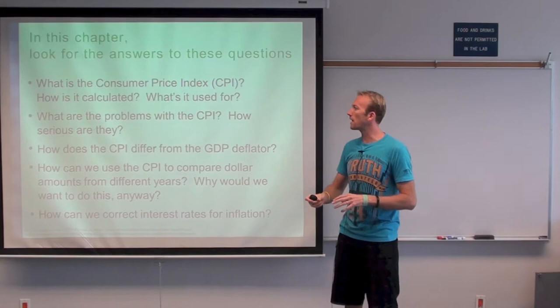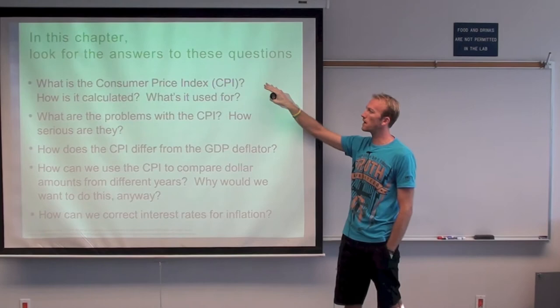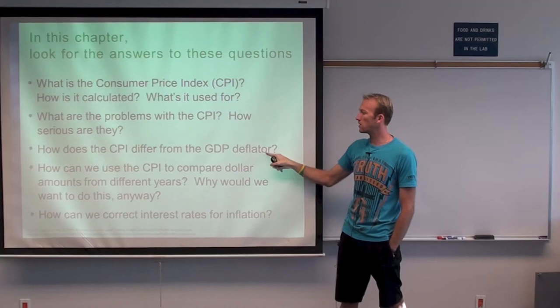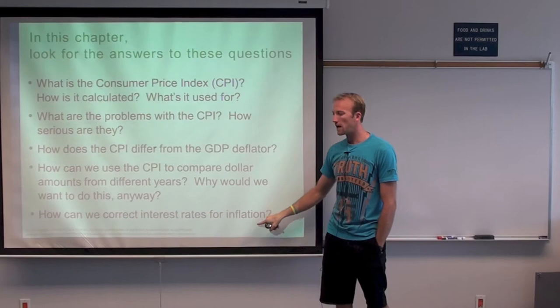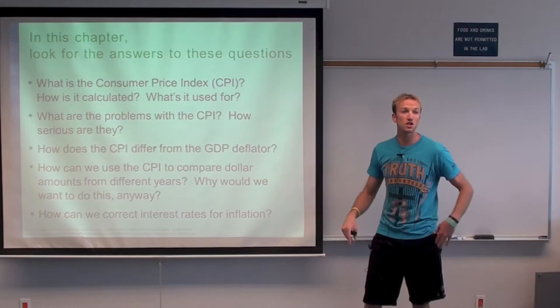The two ways we measure prices here in America are the consumer price index and the GDP deflator. We'll learn about CPI, talk a little bit about the GDP deflator, discuss problems with the CPI, and compare them. We'll also use the CPI to compare dollar values from different years, and talk about what happens to interest rates when we have changes in the price level — i.e., inflation. Inflation just means changes in the overall price level: all prices get a little bit more expensive.